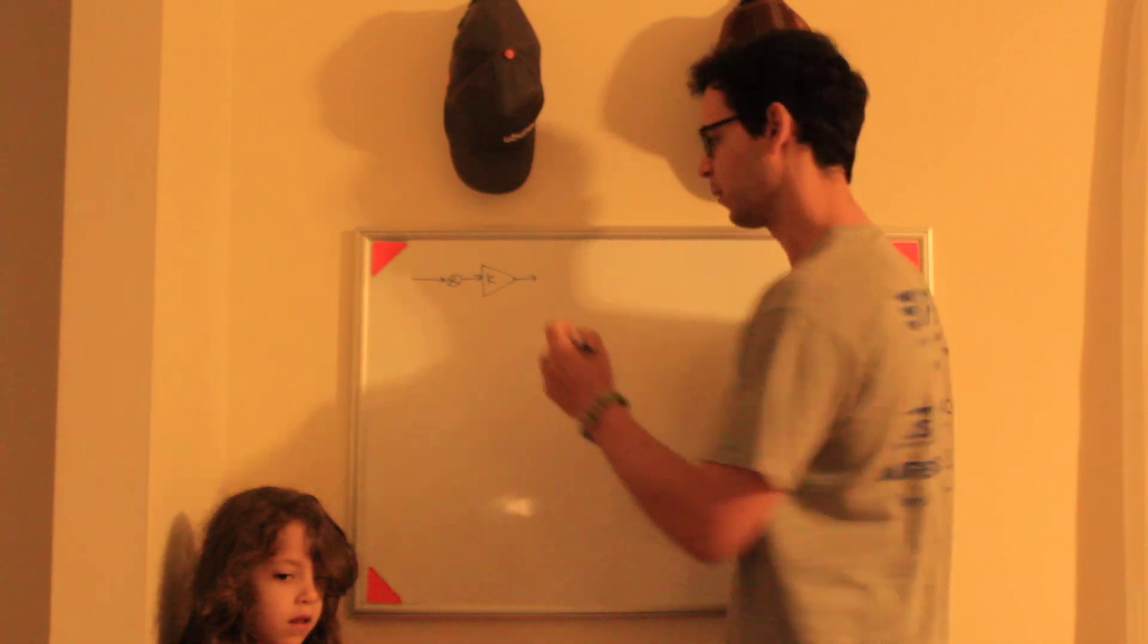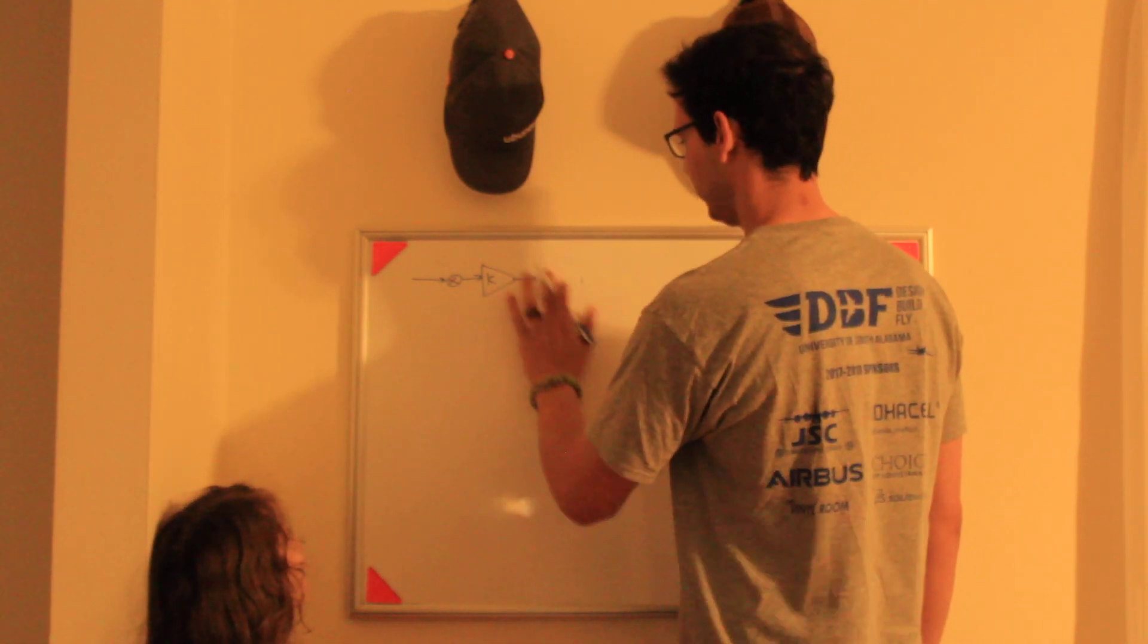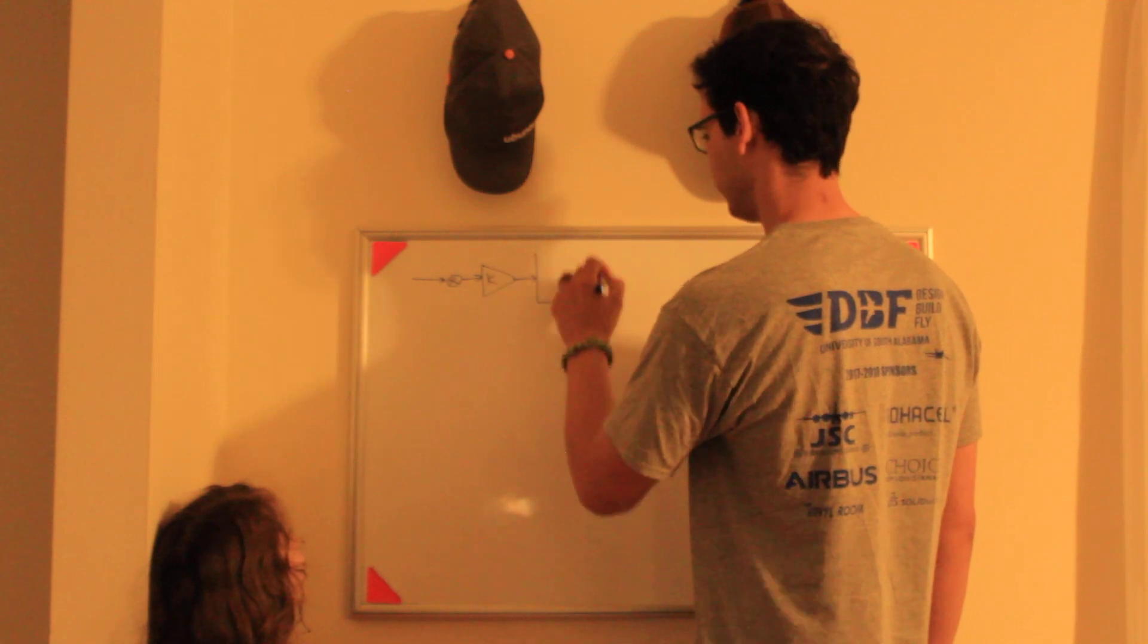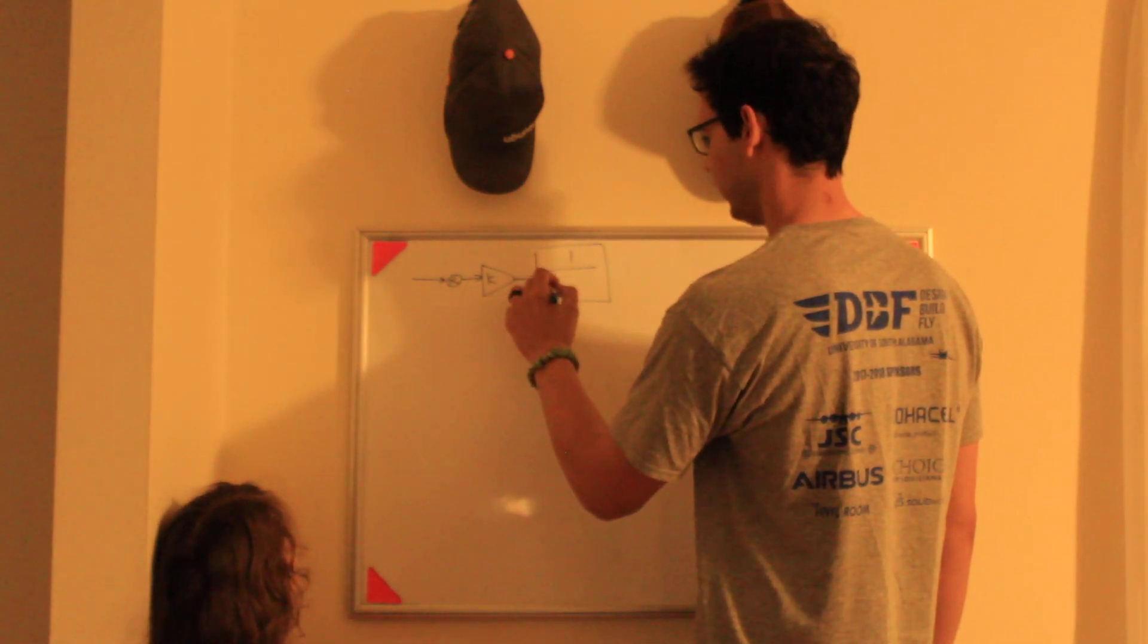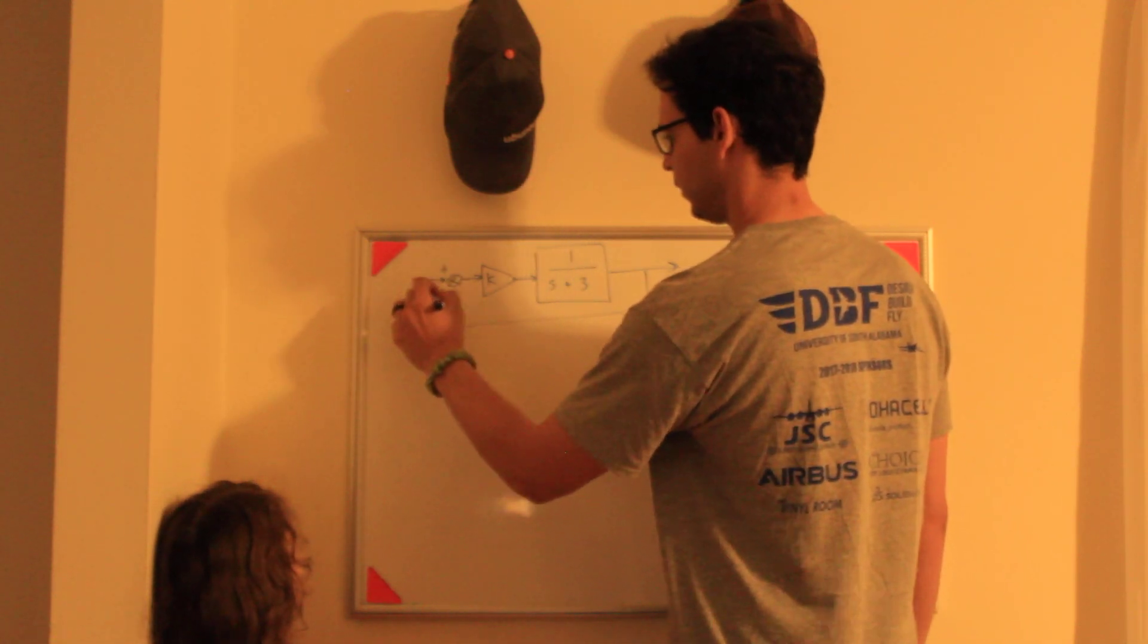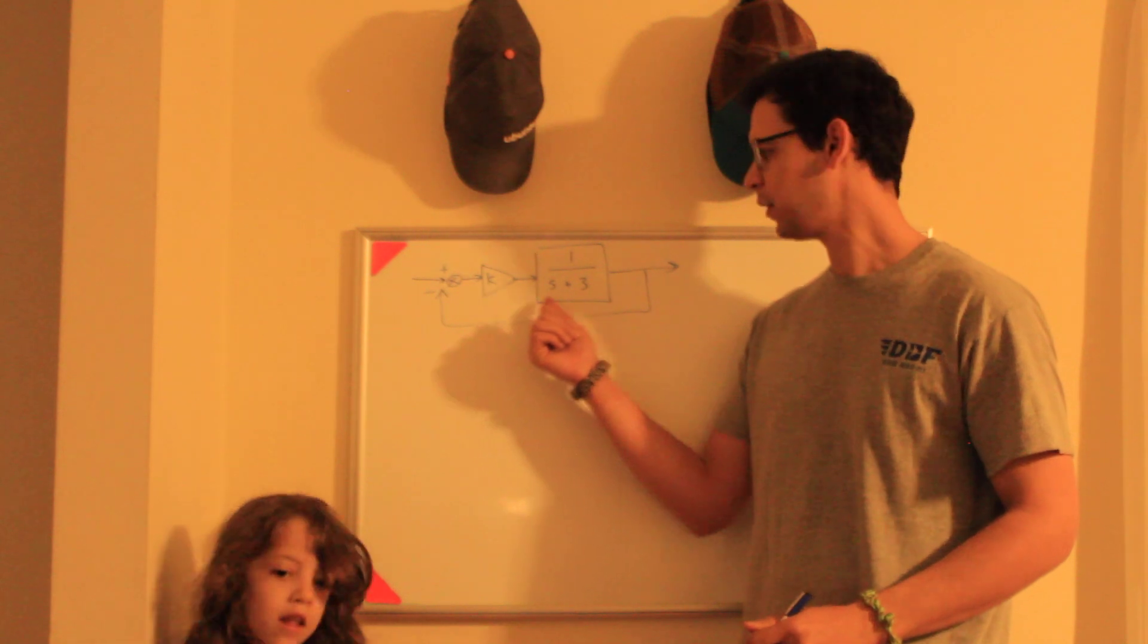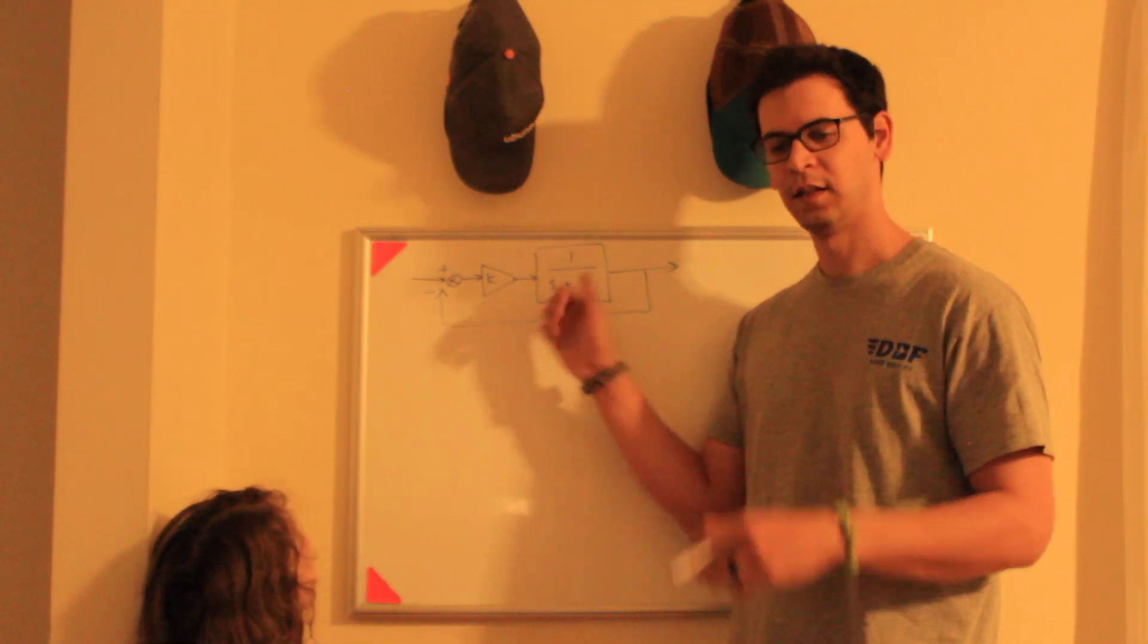Let's do a first-order system, 1 over s plus 3. So I've got a first-order system 1/(s+3), proportional gain here, and then we're going to close the loop to analyze the closed-loop dynamics.